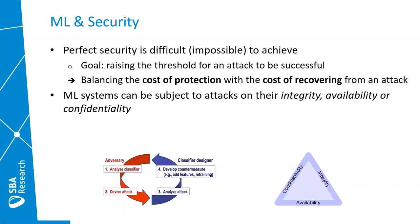As with many other IT systems, perfect security is very difficult or sometimes even impossible to achieve. So also for machine learning, the goal we want to achieve is to raise the threshold for an attack to be successful. Basically we're balancing the cost of protecting our machine learning model against the cost of recovering from an attack. Machine learning models, like other IT systems, could be subject to attacks on the integrity, availability, or confidentiality. Basically we have some kind of cycle where adversaries try to break a system and then the operator or classifier designer tries to devise defenses that can stop these attacks.